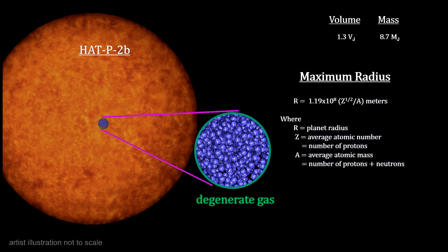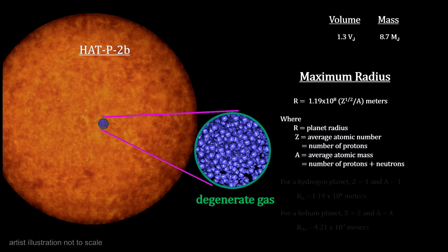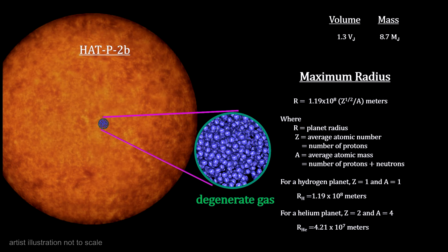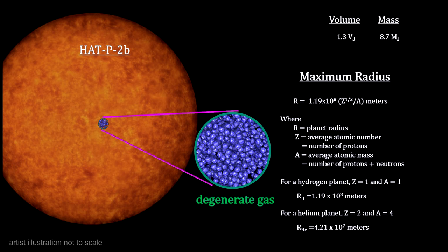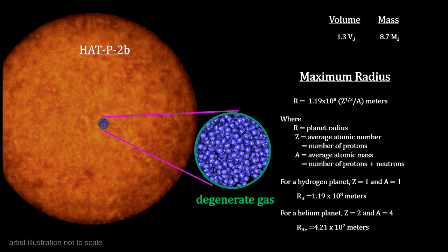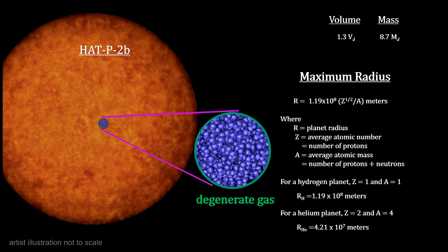The maximum size depends on the planet's composition. We see that a pure hydrogen planet would have a maximum radius almost three times the maximum radius of a pure helium planet.